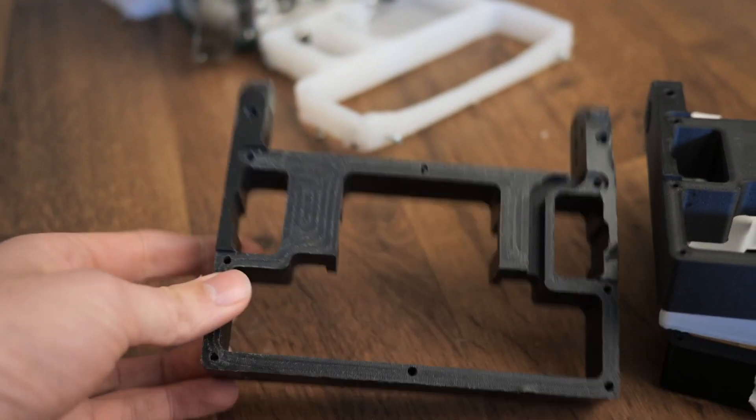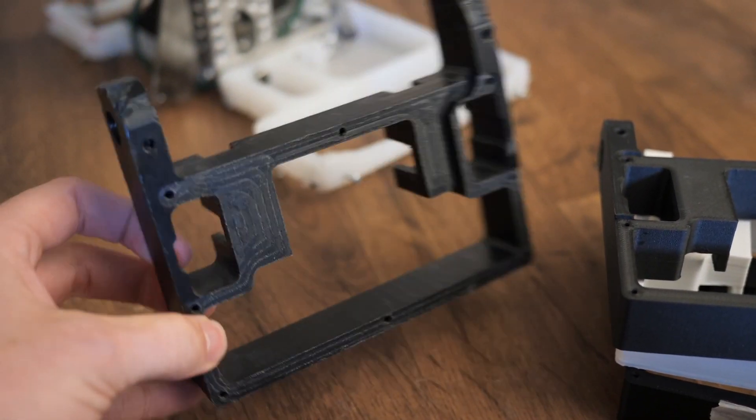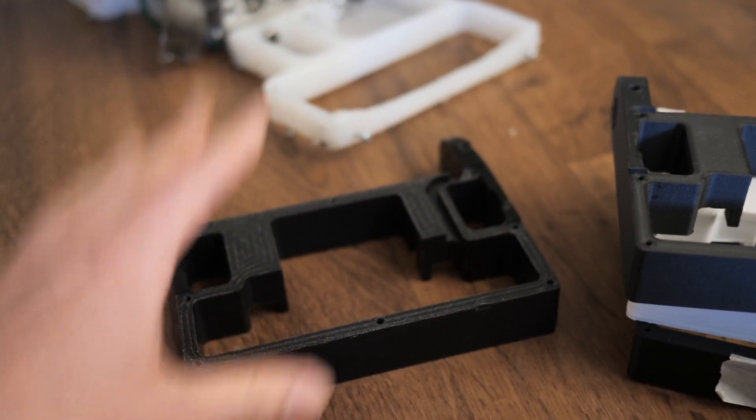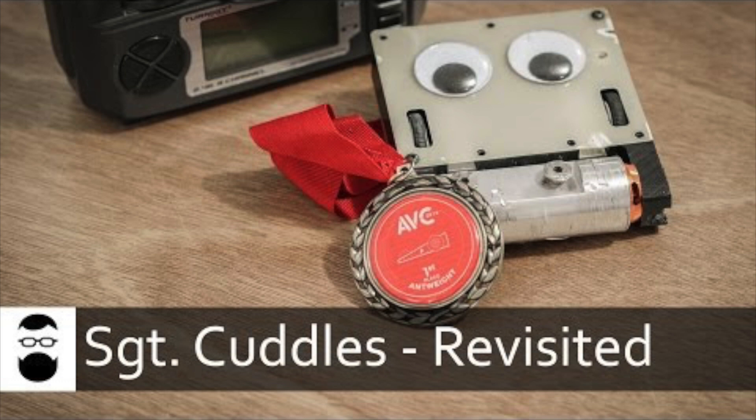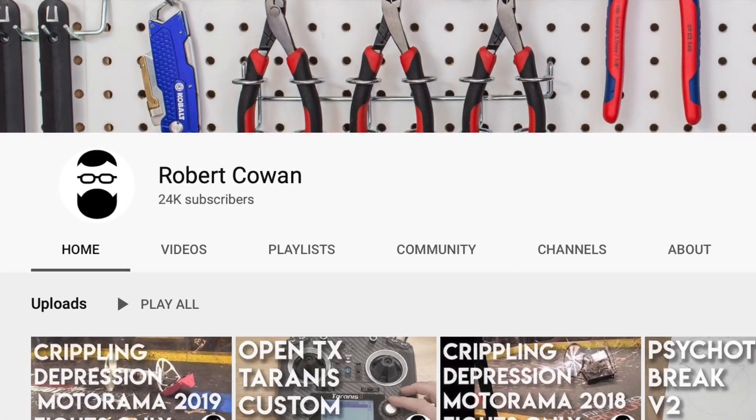And then finally, kind of the holy grail of small combat robot chassis materials, we have a UHMW CNC'd chassis. This is actually from Sgt. Cuddles, and shout out to Robert for this donation, you should go subscribe to him.